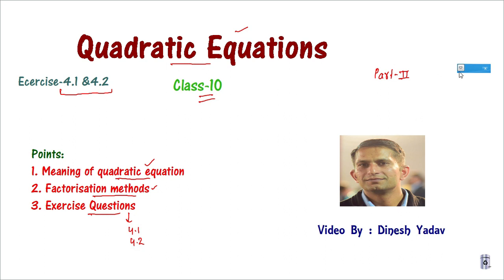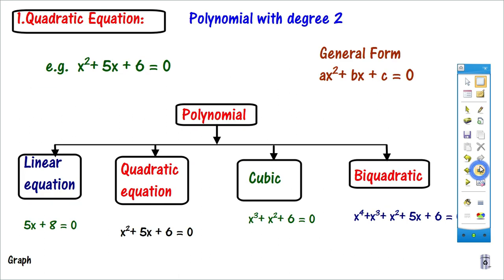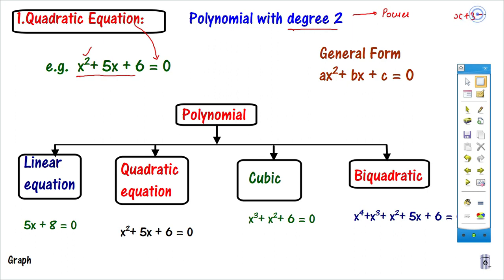The first topic is: what is the meaning of Quadratic Equation? I hope you remember from class 9th that a polynomial with degree 2 — look at degree, which means power — if you have a polynomial with degree 2, the highest power is 2. And equation means there is an equal to sign. For example, x plus 3 is not an equation, but x plus 3 equals 10 is an equation because an equal to sign is there.